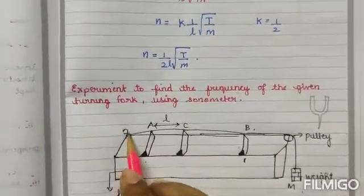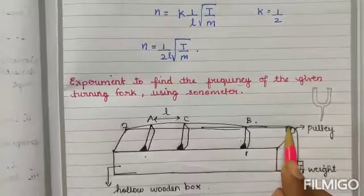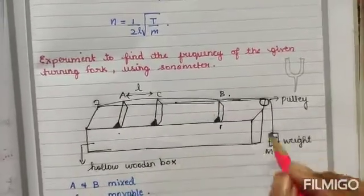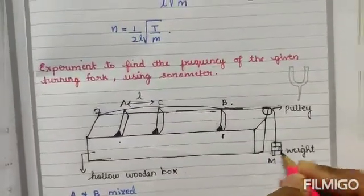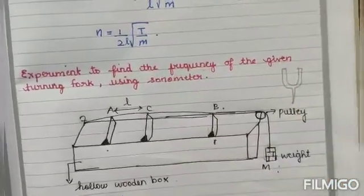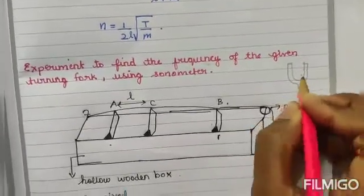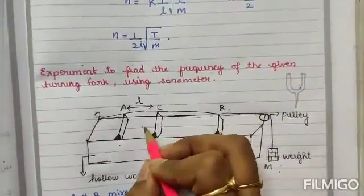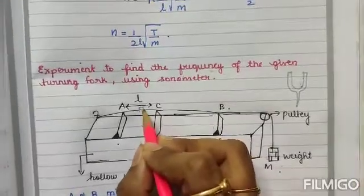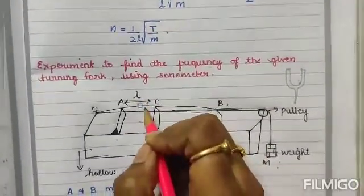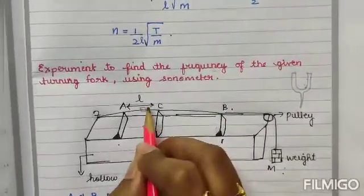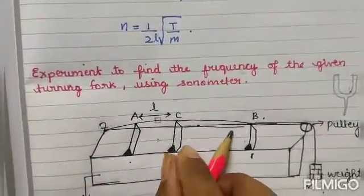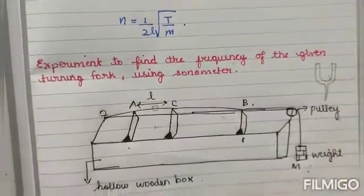A hook is placed at one end, and weights are placed on top of that hook. The other side is rounded. For the procedure: we add weight to create tension. We strike the tuning fork with a rubber cork to add vibrations. A paper rider is fixed — just a small piece of paper placed on top of the wire.